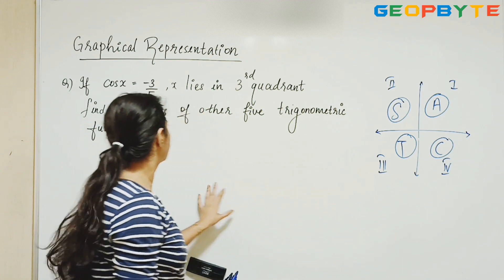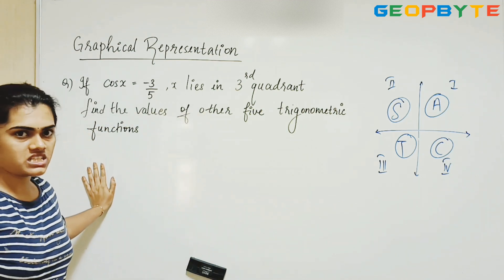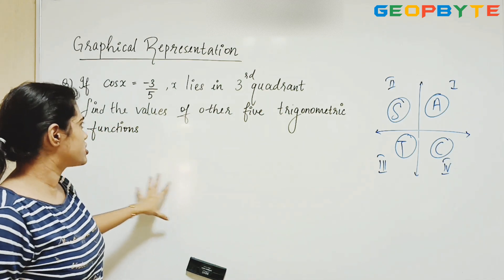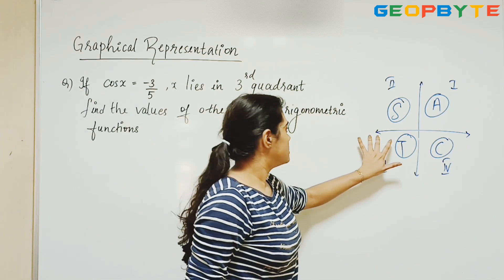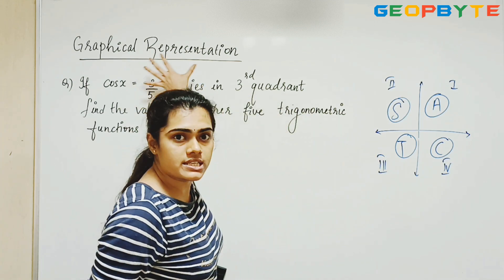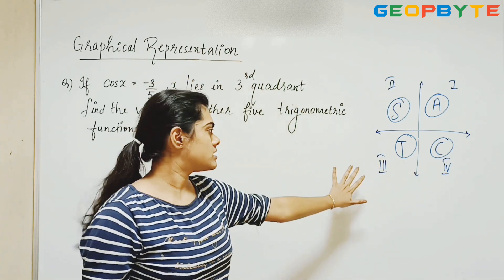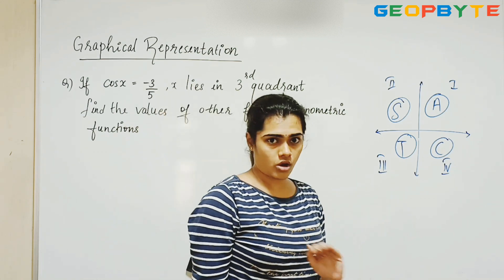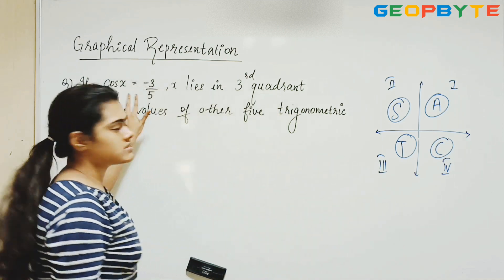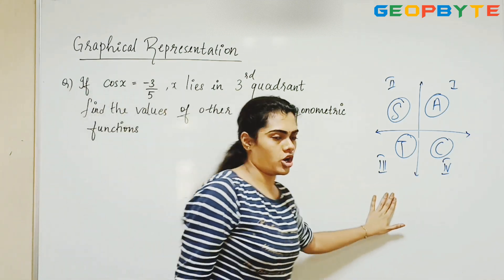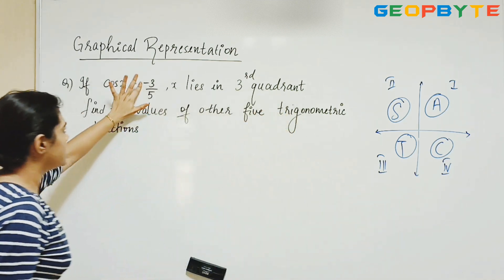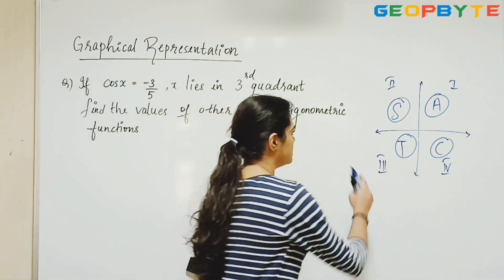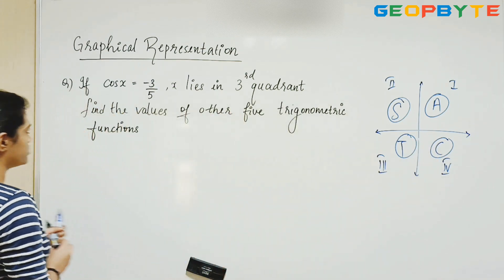The question is: if cos x = -3/5 and x lies in the third quadrant, find the values of the other five trigonometric functions. Using ASTC, in the third quadrant, tan and its complementary angle cot are positive, and all others are negative. That is why cos x is negative in the third quadrant, given as -3/5. Now we have to find the values of the other five functions.